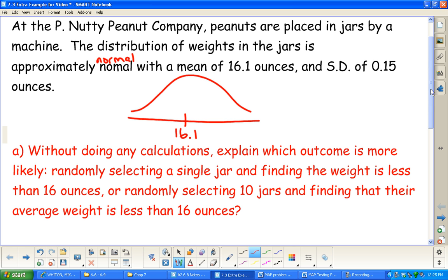Question A: without doing any calculations, explain which outcome is more likely. Would it be more likely to randomly select a single jar and finding the weight is less than 16 ounces, or randomly selecting 10 jars and finding that their average weight is less than 16 ounces?